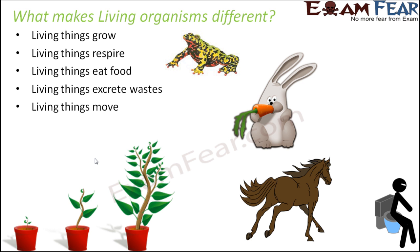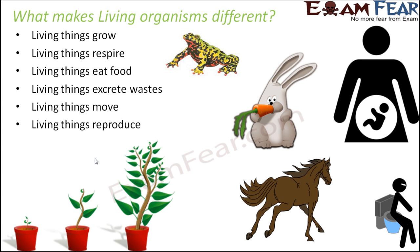Living things move. Most living organisms are capable of moving from one place to another, though plants are an exception. Living things also reproduce — they can produce more organisms of their own kind. Human beings give birth to babies, and a plant can give rise to new plants. So all living organisms are capable of reproducing.